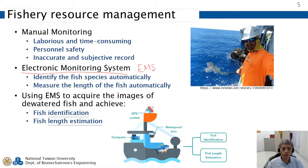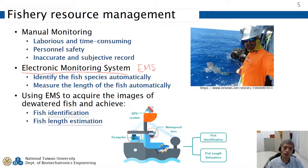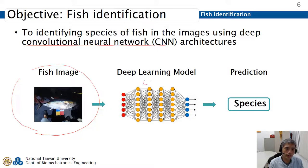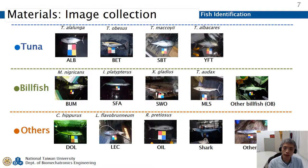EMS is a system installed on fish vessels that includes cameras and a computer to monitor the fish harvesting process. Using EMS we don't have to send human observers, but we still need humans to interpret the EMS images, which is still laborious. Our objective is to automatically identify fish in EMS images using a convolutional neural network, CNN, where the image is the input and the output is the fish species.